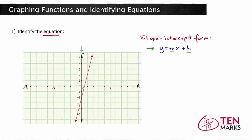Let's begin by trying to find b. The x value of the y-intercept is always zero, so that's this main y-axis line right here. The line crosses the y-axis at the point (0, -2), so we know that the value of b is negative 2. So now let's begin to write in our equation: y equals mx minus 2, because we have negative 2 as the value of b. Now what we need to do is identify the slope.